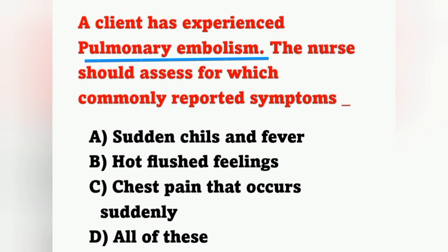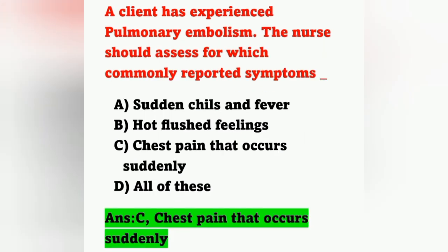Next question: a client has experienced pulmonary embolism. The nurse should assess for which commonly reported symptom? Options: option A sudden chills and fever, option B hot flushed feelings, option C chest pain that occurs suddenly, option D all of these. The patient diagnosis is pulmonary embolism and the nurse is assessing which is the most commonly reported symptom. The correct answer is option C — chest pain that occurs suddenly.